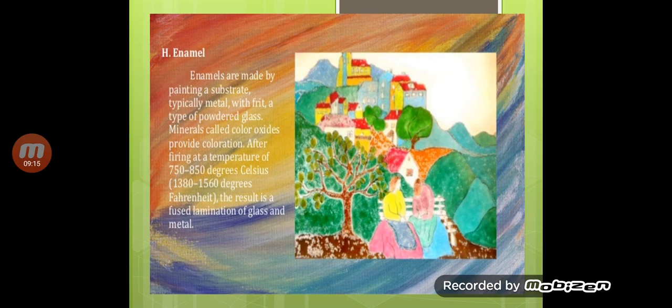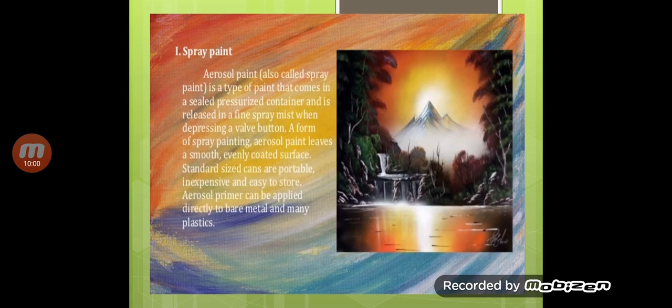In watercolour you have to leave the sheet white for highlights, but gouache allows you to add white directly. Enamel is made by painting a substrate — typically metal — with frit, a type of powdered glass. Mineral color oxides provide coloration. After firing at a temperature of 750 to 850 degrees, the result is a fused lamination of glass and metal. The end result of enamel painting has a very shiny, glossy feeling.